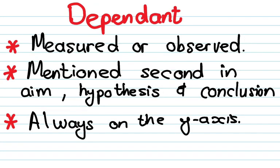When we look at the dependent variable, this is the one where you have to do something. You have to measure it or you have to observe it. It is also always mentioned second in the aim, the hypothesis, and the conclusion, and it's always on the y-axis.